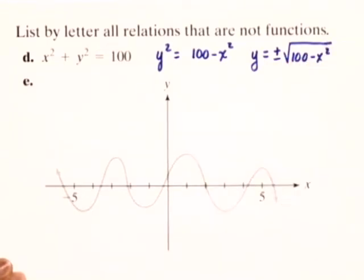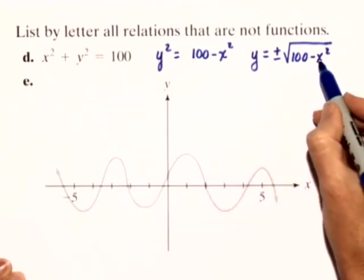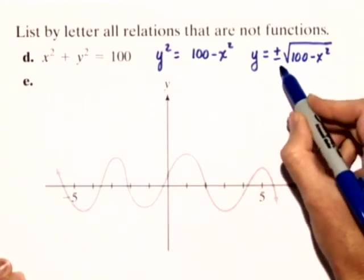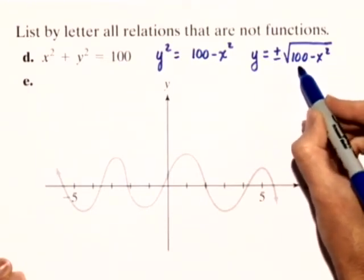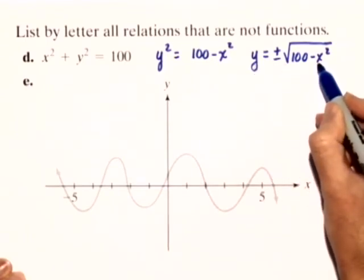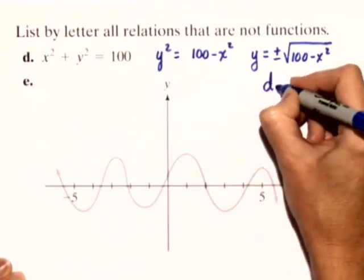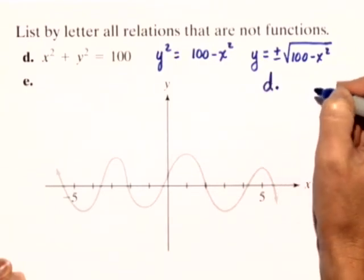Now notice what happens. If two or more values of Y can be obtained for a given value of X, then the equation is not a function. So suppose we put in a value for X like 0. That's an easy value to put in. We would have plus or minus the square root of 100. That means Y would give us two different values for one value of X, and therefore, it would not be a function. So we'll also list D among those that are not functions.